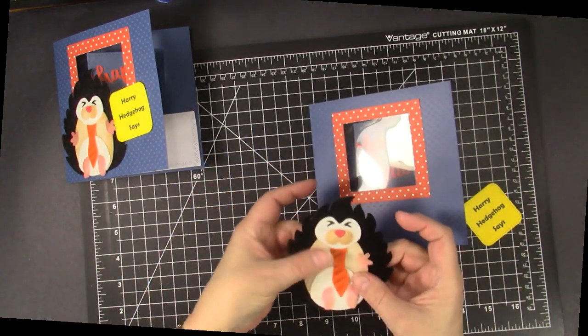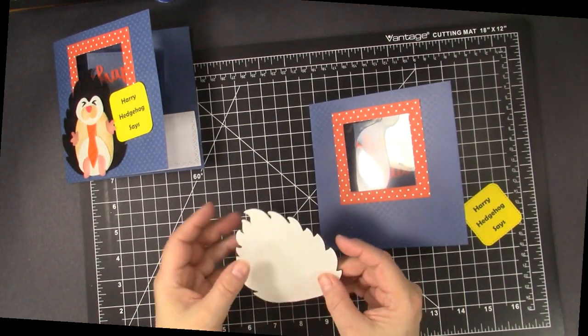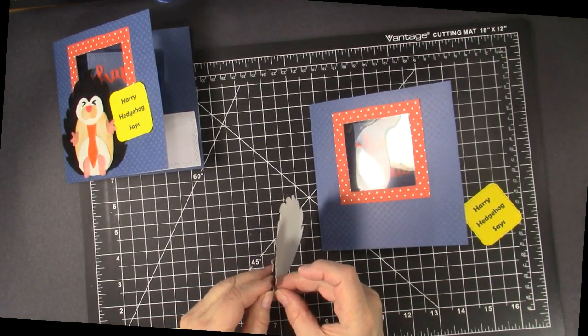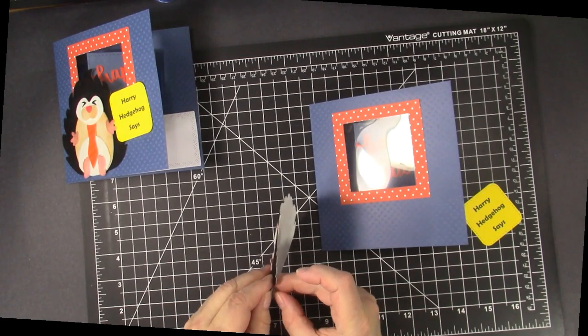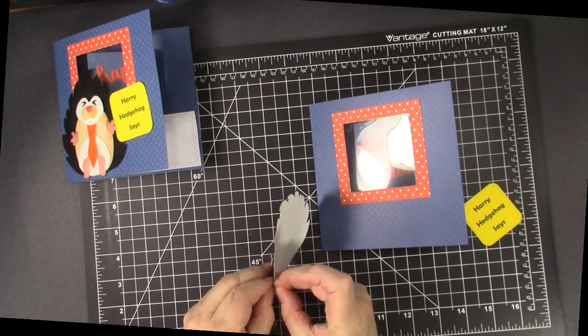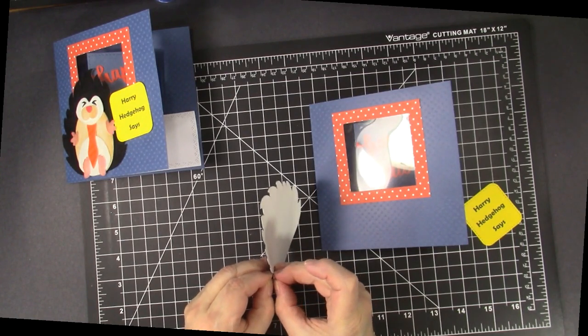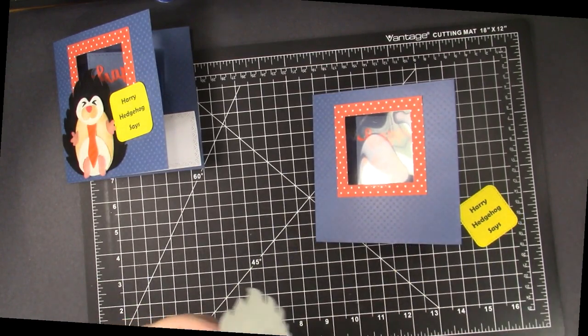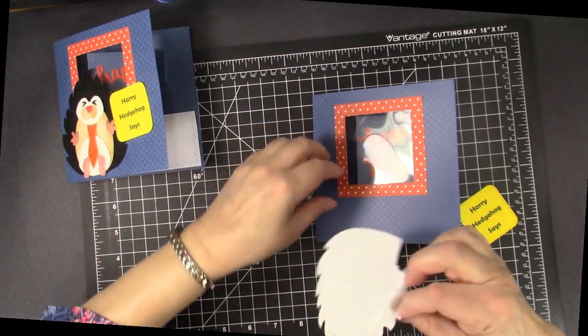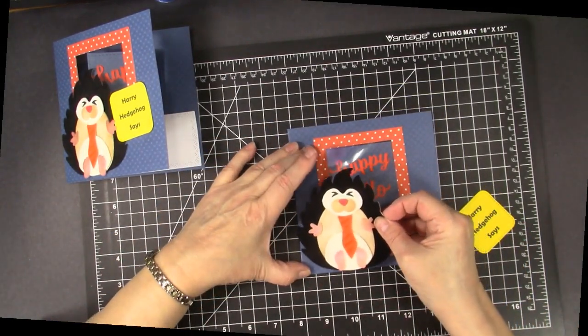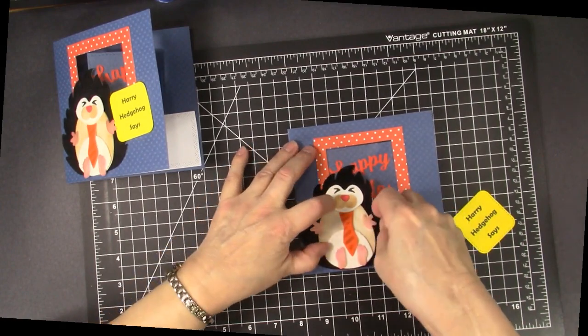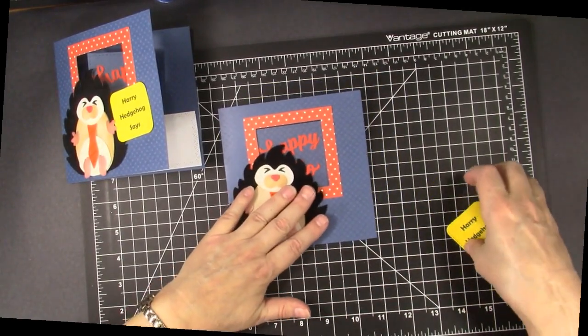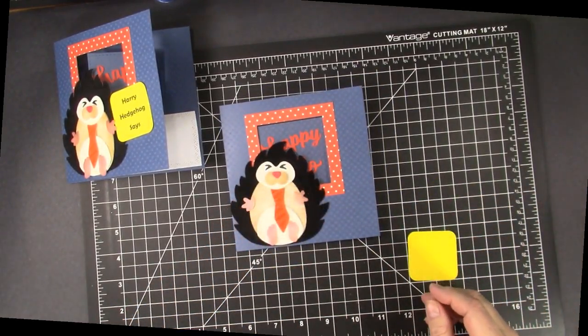And then we're going to attach our Hairy Hedgehog. And we're using the back of those adhesive sheets so it's two-sided adhesive. So it's very convenient and very sticky and sometimes hard to get off. But I'm trying to get it started here. Very, very sticky. Sticking to my hands.